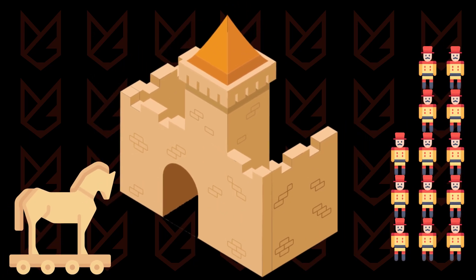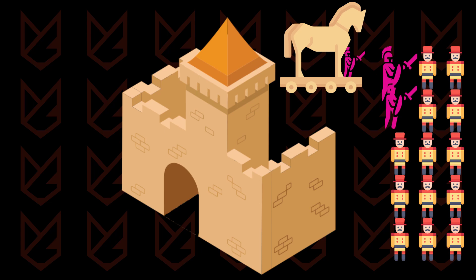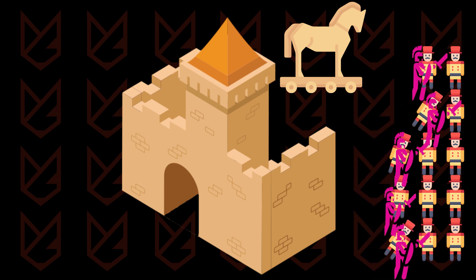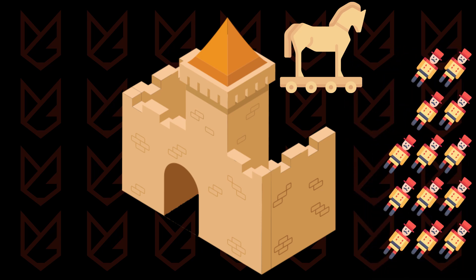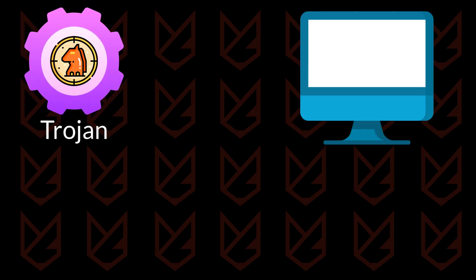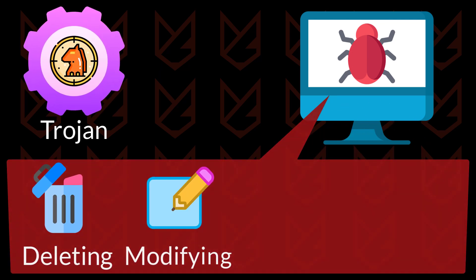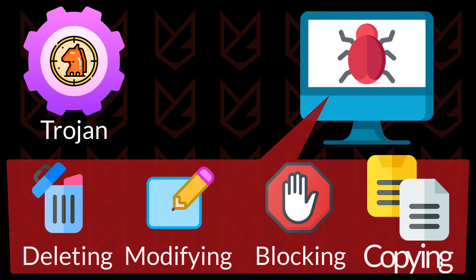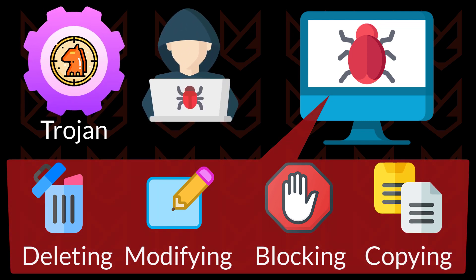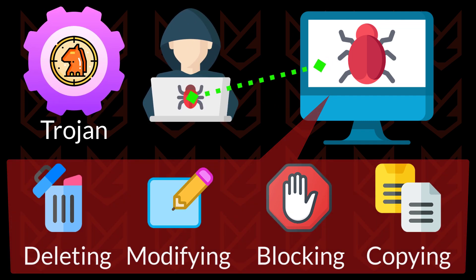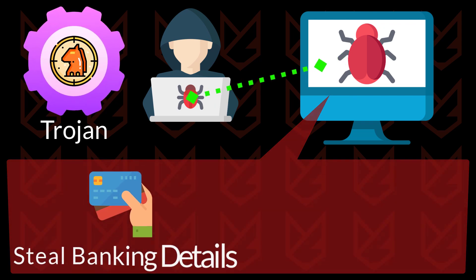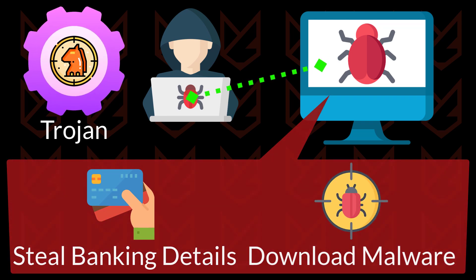The name Trojan is based on the famous Greek story of a Trojan horse. Trojans are another widespread infection threatening systems for a long time. Trojan malware presents itself as a useful, legitimate application to lure users into installing it. After getting installed, Trojans remain in the background and silently perform malicious activities such as deleting, modifying, blocking, and copying data by giving backdoor remote control to cybercriminals. It can also steal your banking information and download other malware programs on the system.